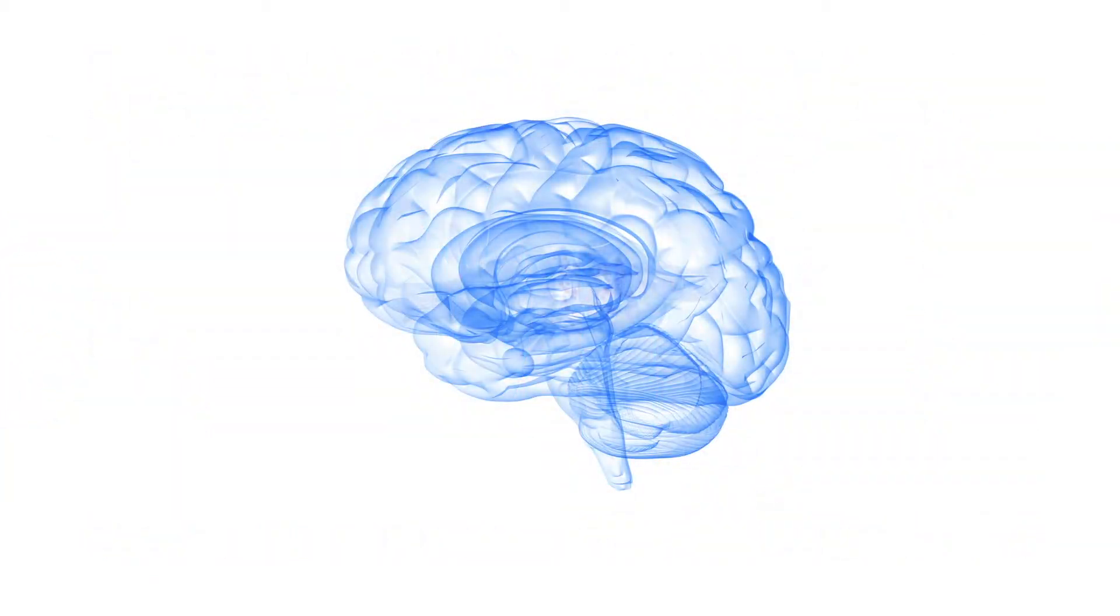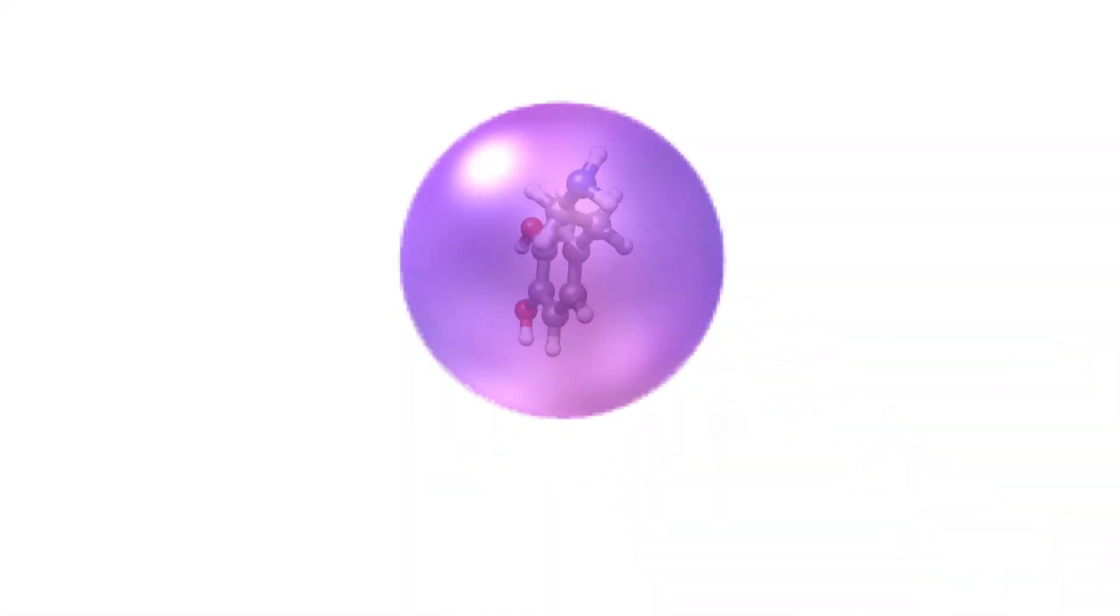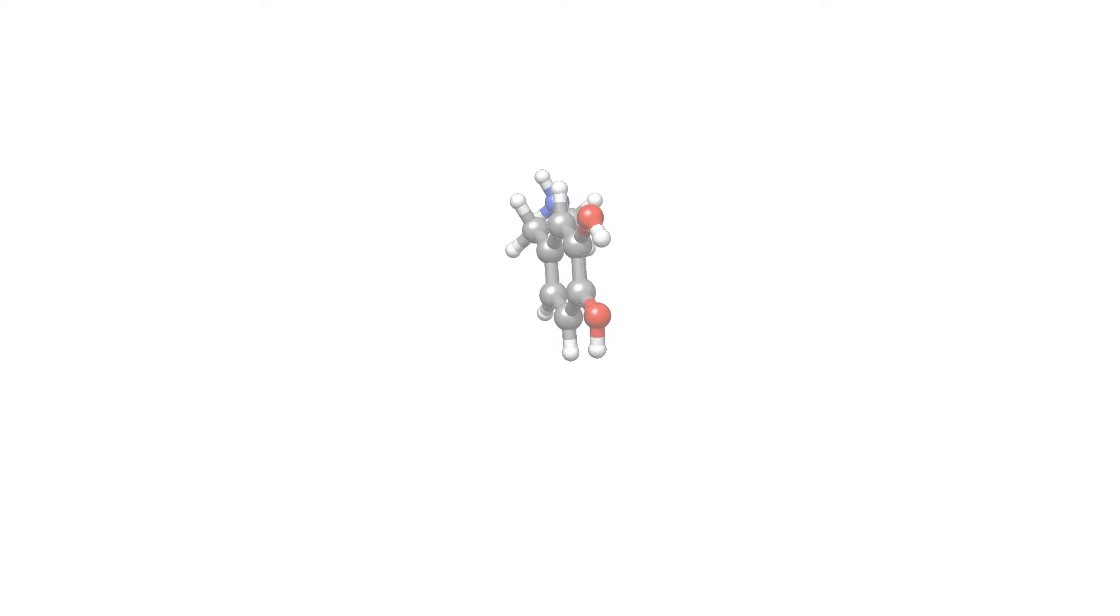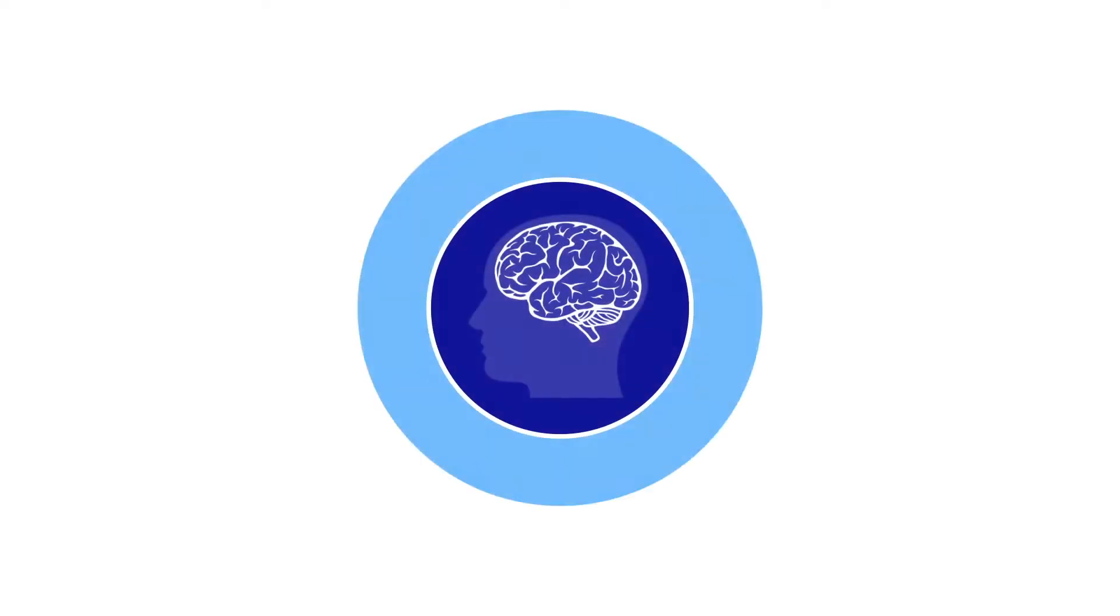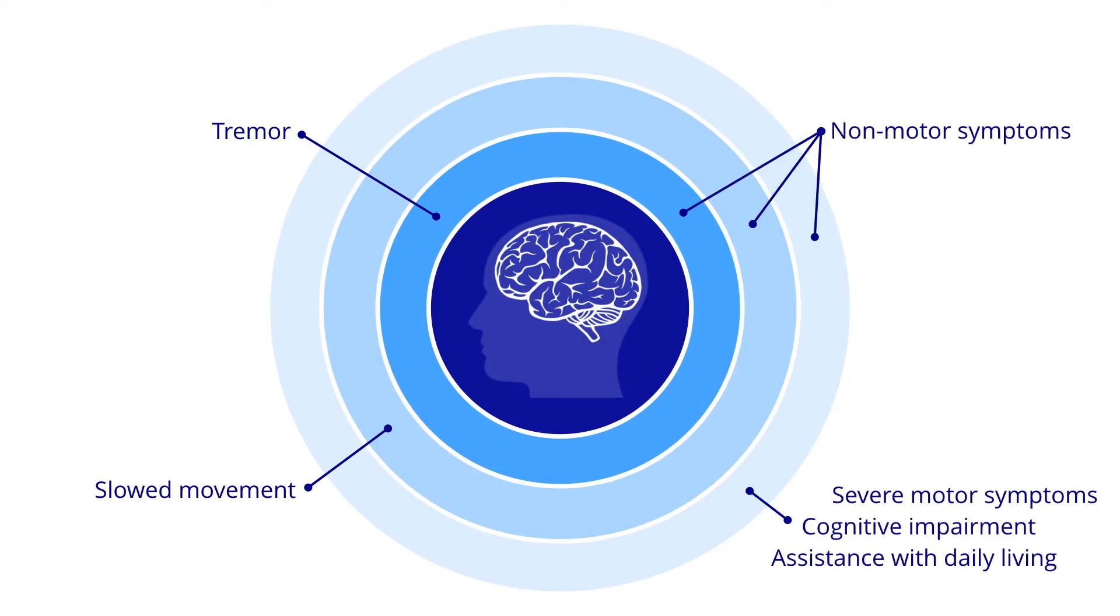Parkinson's is caused by the death of dopamine-producing neurons in the midbrain. As a consequence, there is not enough dopamine in the brain. Dopamine is an important neurotransmitter. Without enough dopamine, we lose the ability to control our movements. This causes the motor symptoms of Parkinson's such as tremor and rigidity.